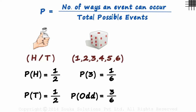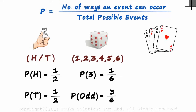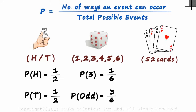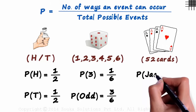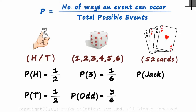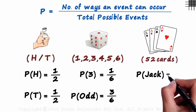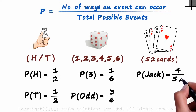The last example is that of a pack of cards. Let's assume a pack of fifty-two cards. Say we pick a random card from this pack — what is the probability that we will pick a jack? There are four jacks in the entire pack, one in each suit, and the total number of cards is fifty-two. The probability of picking a jack from a pack of fifty-two cards is four over fifty-two.